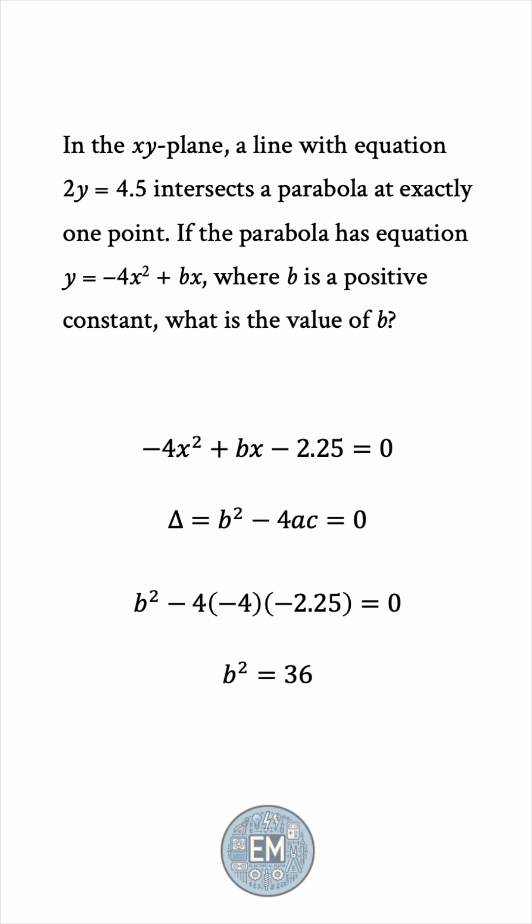And now, to find b, we take the square root of 36. Usually we take the positive and negative square roots, but because the problem says b is a positive constant, we'll only have the positive solution, b equals 6.